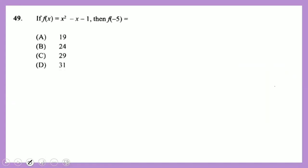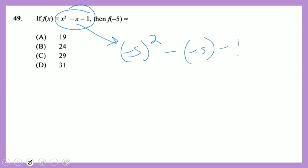Question 48: given f(x) = x² − x − 1, find f(−5). Substitute x = −5: (−5)² − (−5) − 1 = 25 + 5 − 1 = 29.